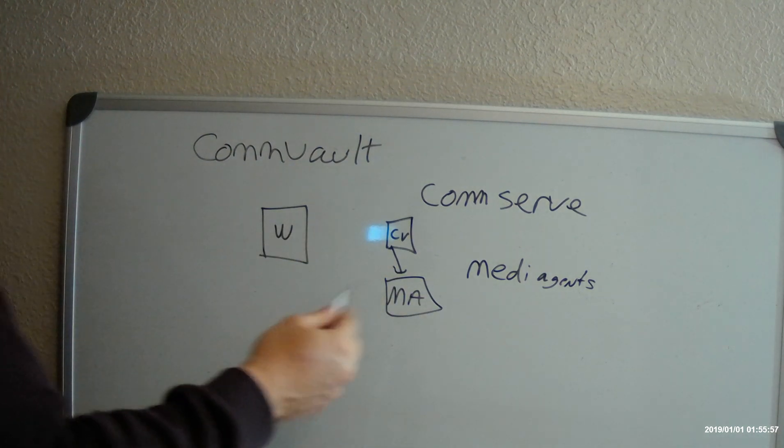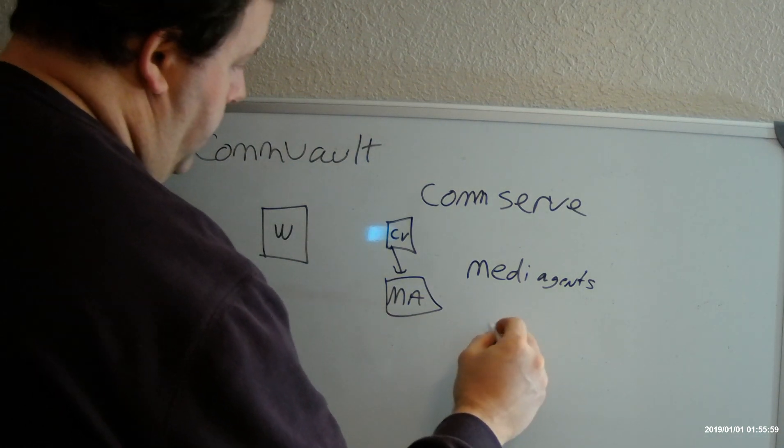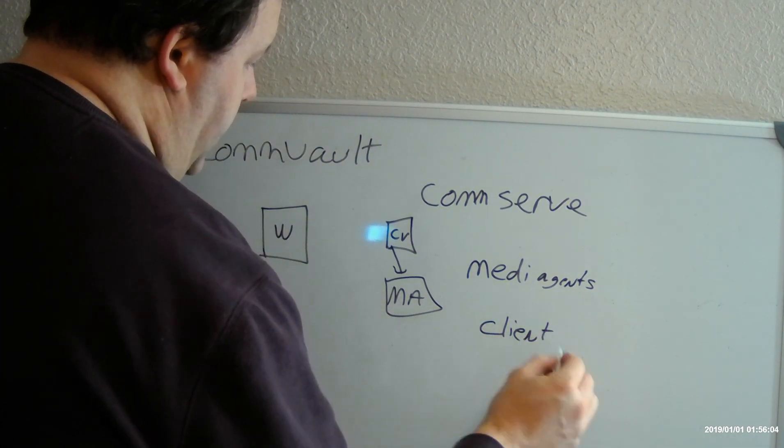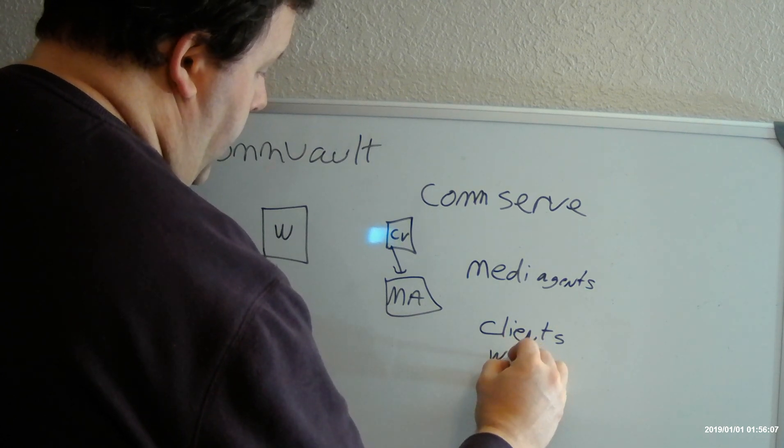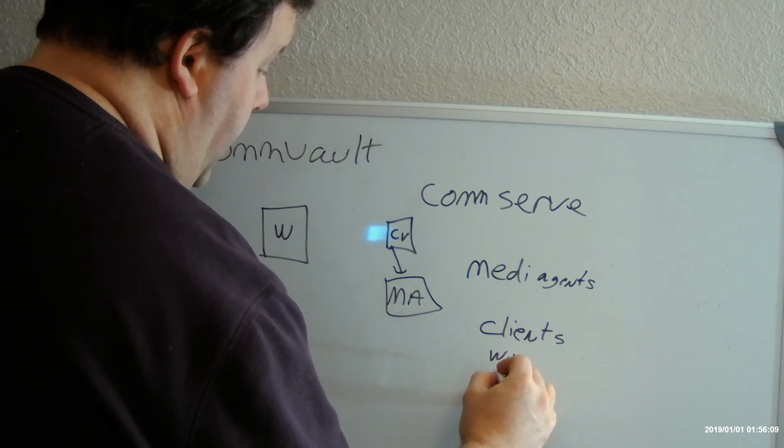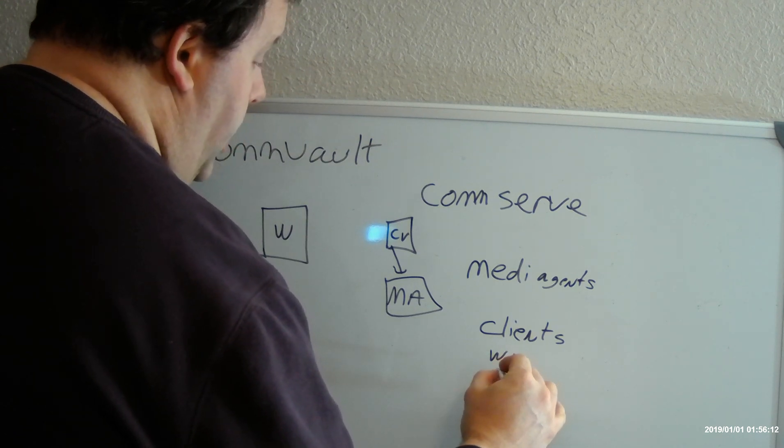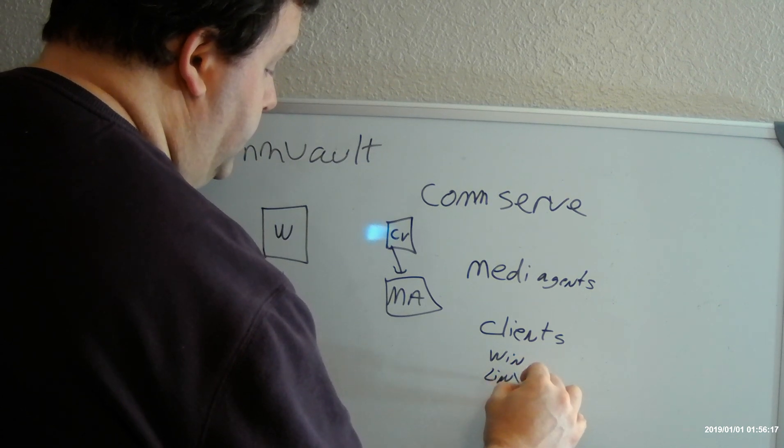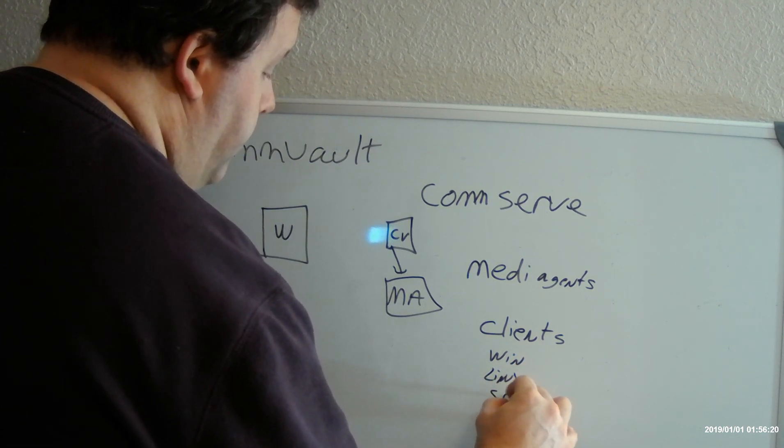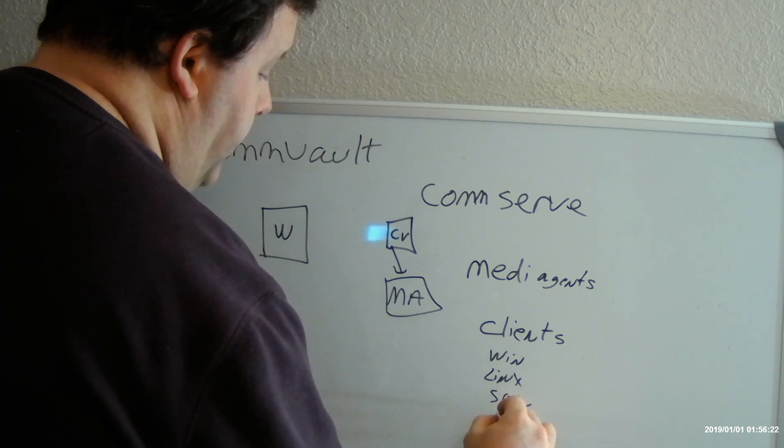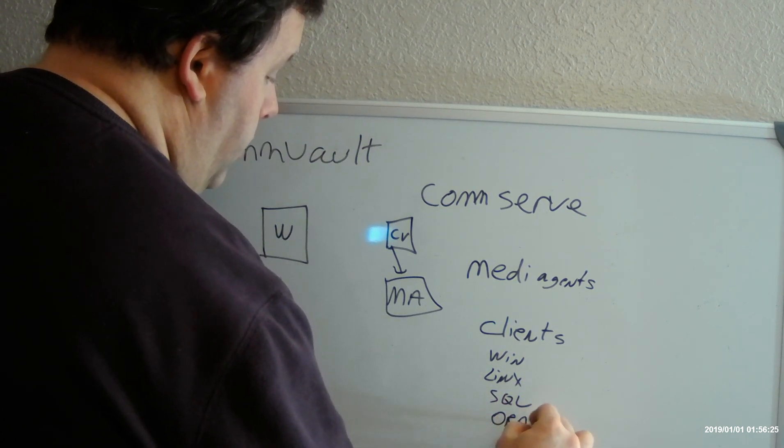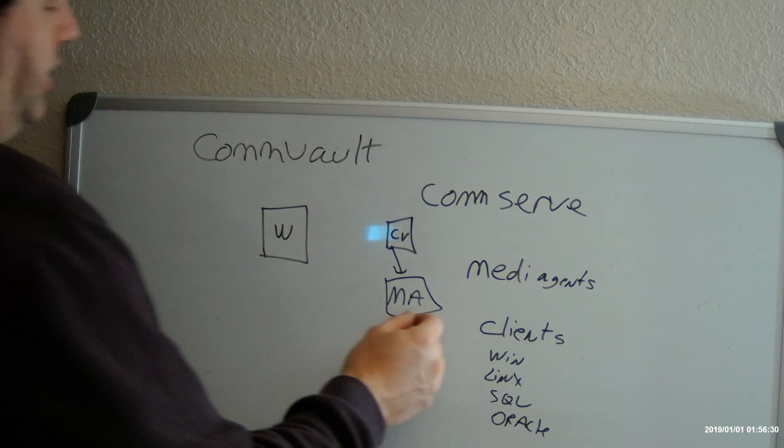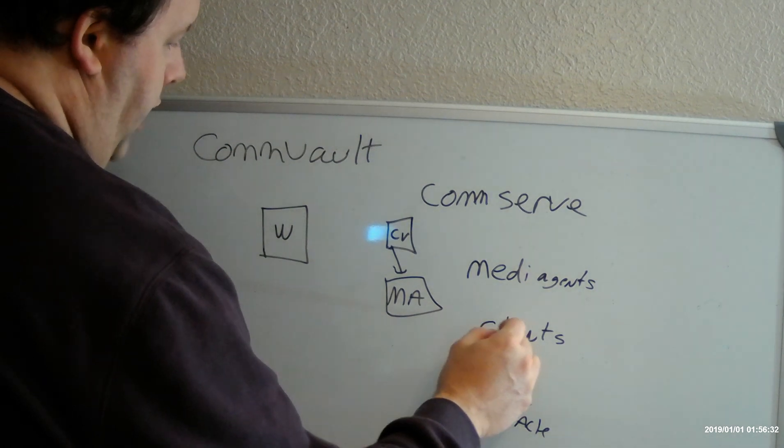Now you also have clients. The clients can be Windows, they can be Linux, they can be Oracle DBA, they can be SQL instances, they can be UNIX, they can be NAS drives, they can be Oracle. So the clients can be any of these instances.